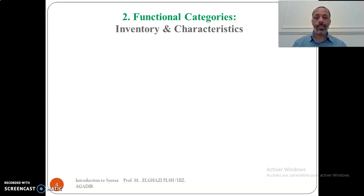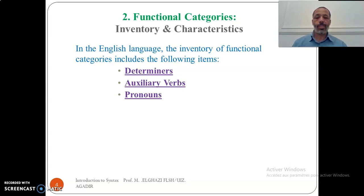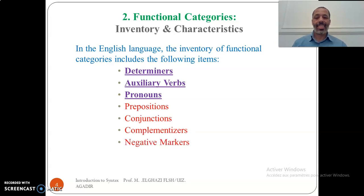Now we move to the second point after the definition, which is about the list of functional categories. In the English language, the inventory of functional categories includes determiners, auxiliary verbs, and pronouns — which we will see in what remains of this recording. There are others like prepositions, conjunctions, complementizers, and negative markers, which we are going to see in the forthcoming recording.